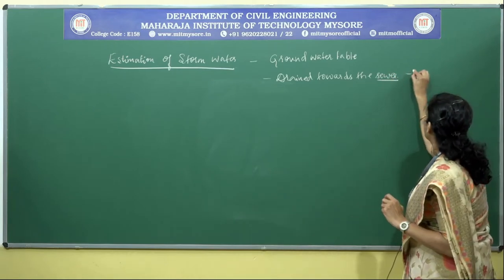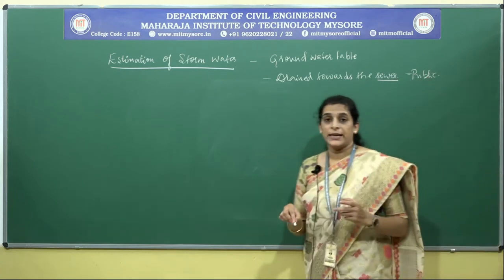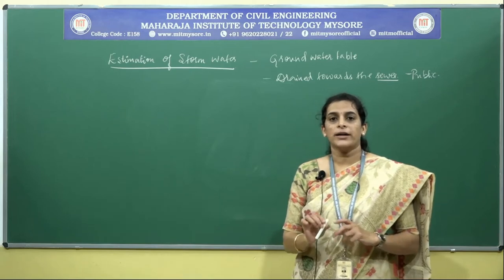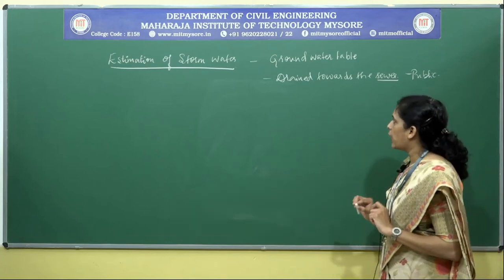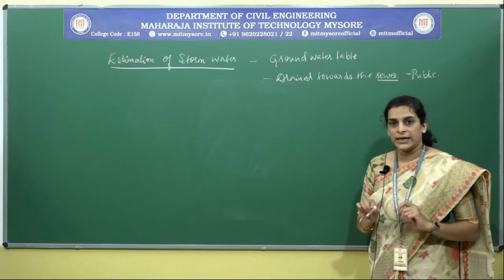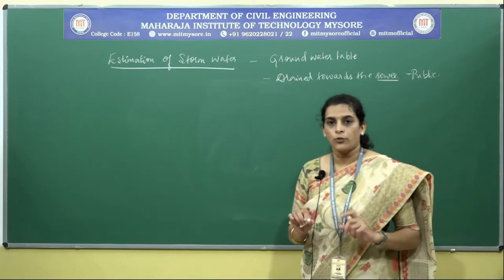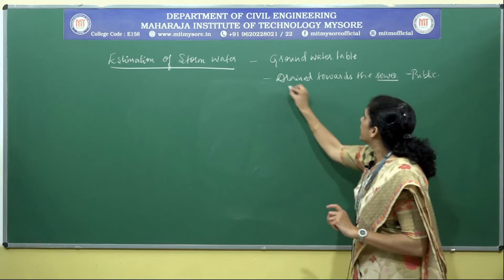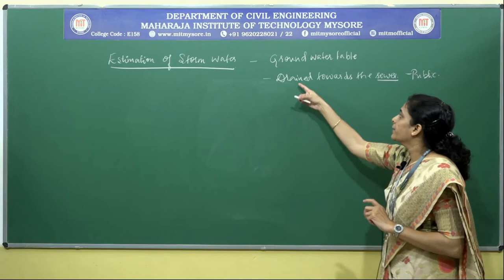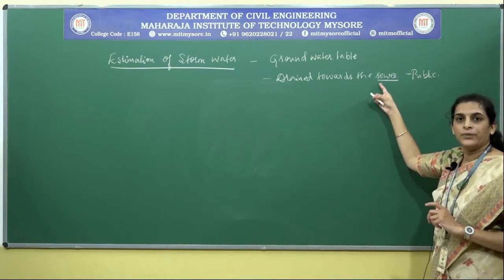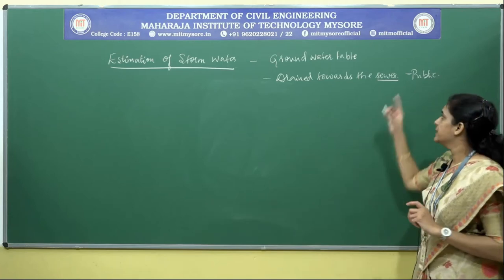This public sewer may be either a combined sewerage system or a separate sewerage system. We have to consider that portion of the rainwater or storm water that will reach the public sewer — that is, the portion of rain that is reaching the drain or the sewer.